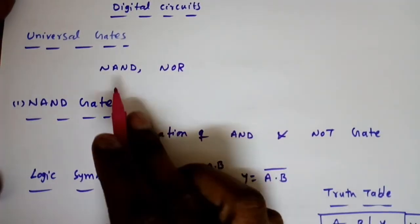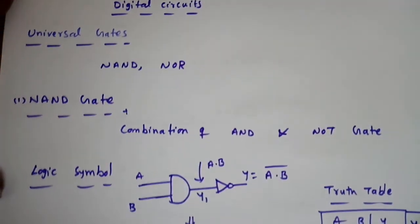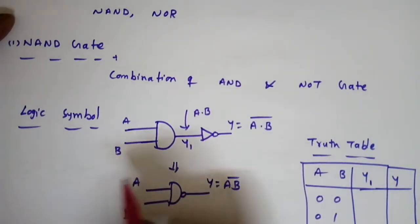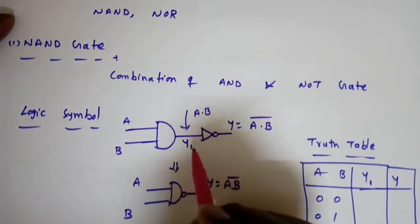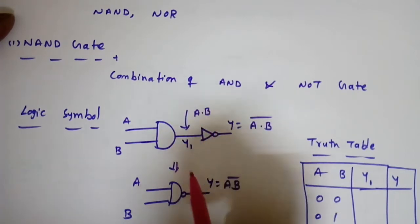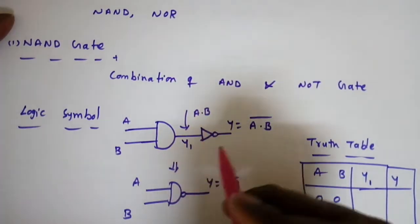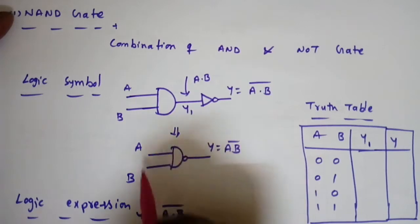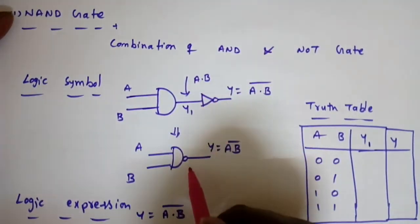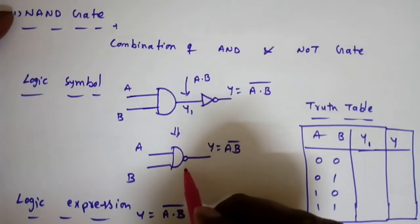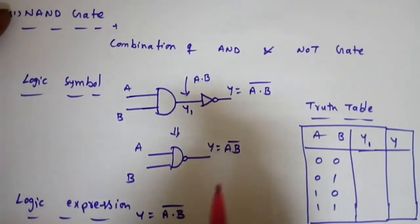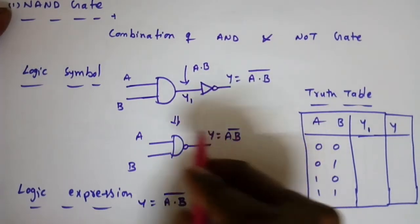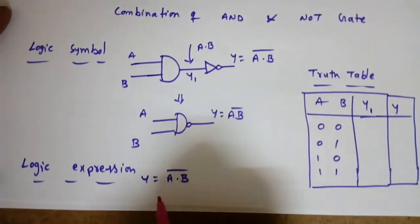We will see the universal gates: NAND and NOR gates. The NAND gate is a combination of an AND gate and a NOT gate. The logic symbol is an AND gate followed by a NOT gate, giving output y1 = A·B, which is then applied to the NOT gate, resulting in A·B̄ (A AND B, whole bar). The bubble in digital systems always represents complement or inversion.